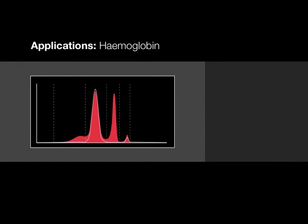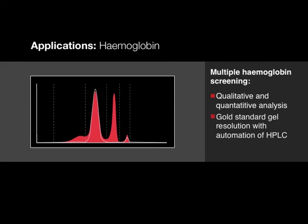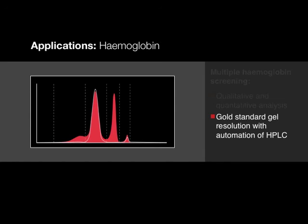The V8 haemoglobin isoelectric focusing assay is designed for screening and diagnosis of multiple haemoglobin disorders. Within one assay, the V8 can deliver qualitative and quantitative haemoglobin analysis.